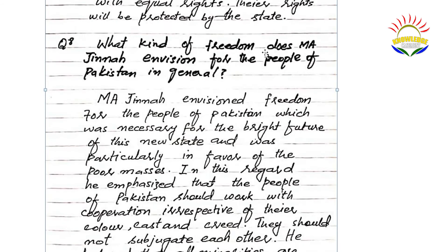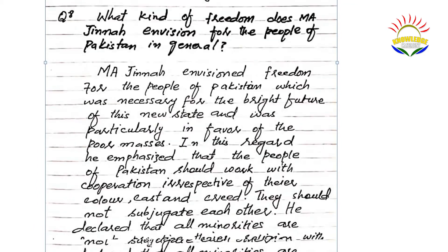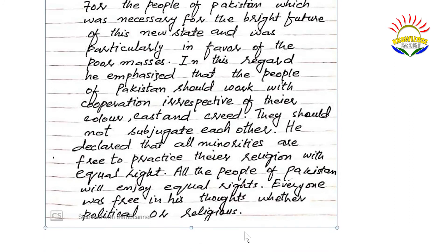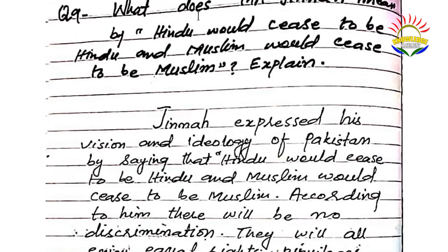Question number eight: what kind of freedom does M.A. Jinnah envision for the people of Pakistan in general? M.A. Jinnah envisioned freedom for the people of Pakistan which was necessary for the bright future of this new state, and was particularly in favor of the poor masses. He emphasized that the people of Pakistan should work with cooperation irrespective of their color, caste, and creed. They should not subjugate each other. He declared that all minorities are free to practice their religion with equal rights, and all the people of Pakistan will enjoy equal rights — everyone was free in their thoughts, whether political or religious.